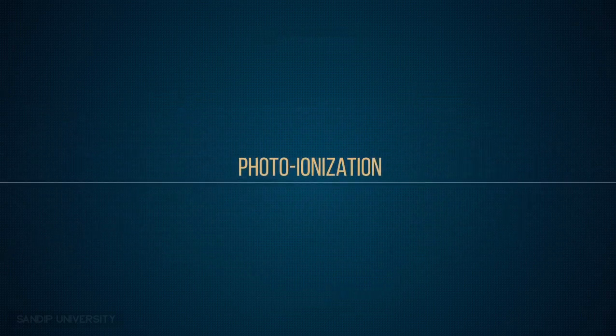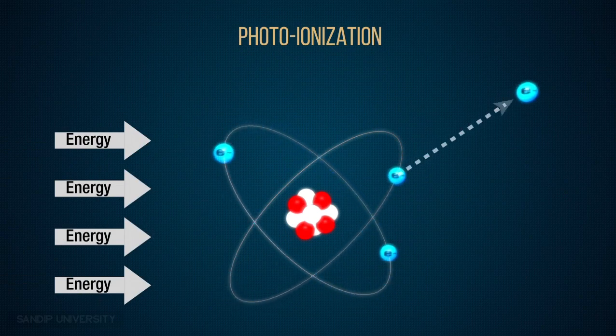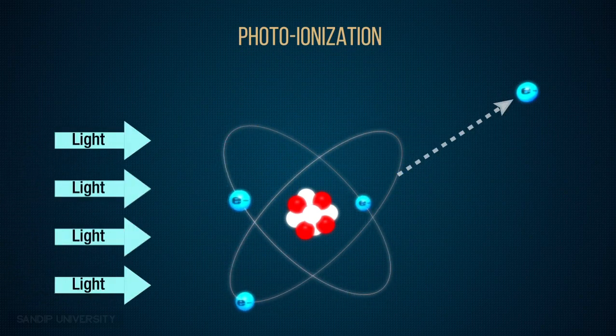Photo-ionization. The source of energy can be anything that can break apart the nuclear structure of an atom. Let's see how it happens when light becomes the source of energy.